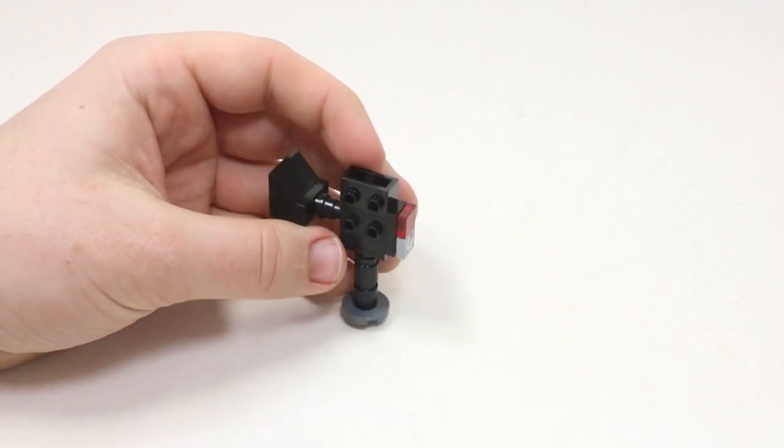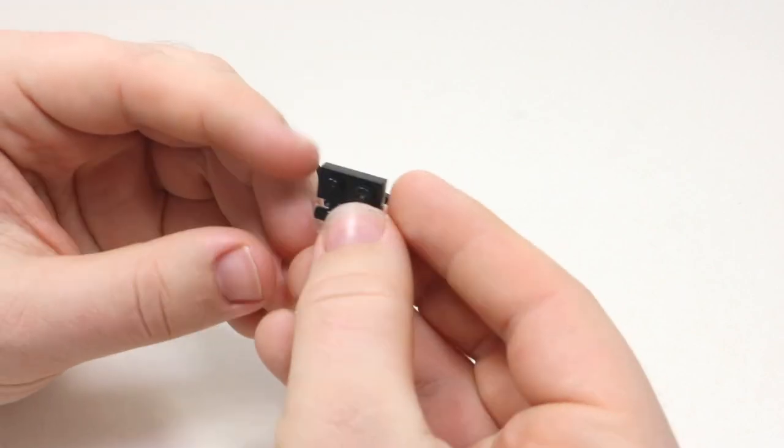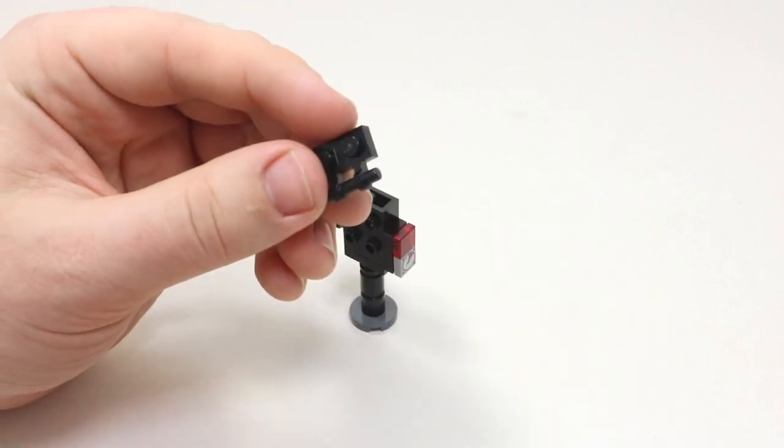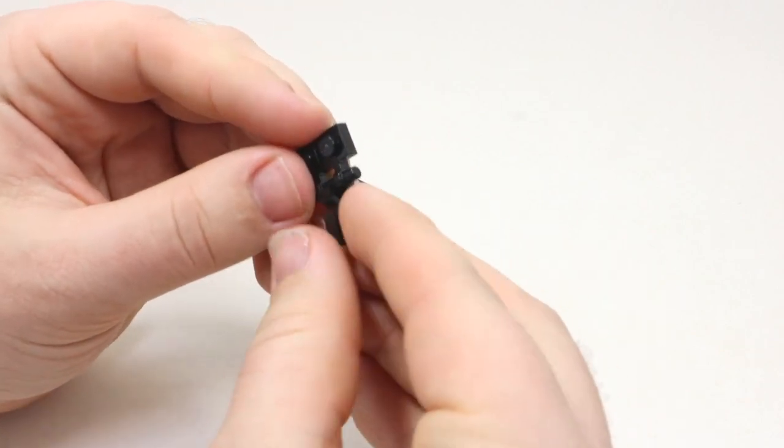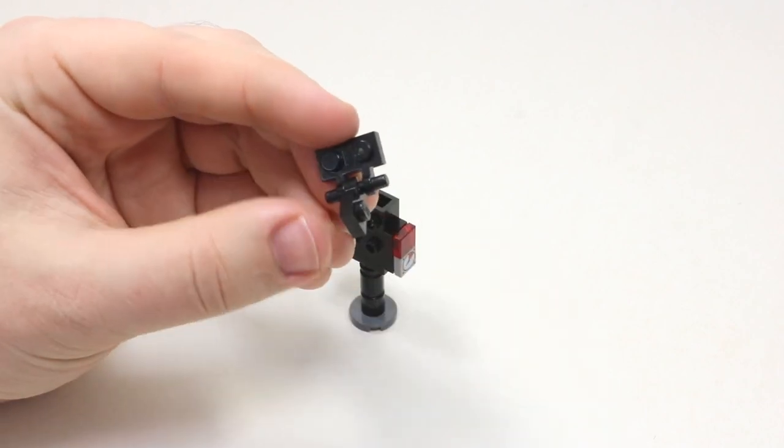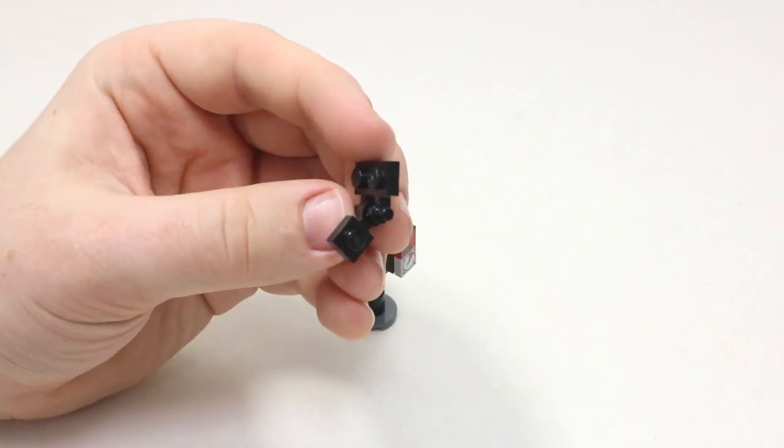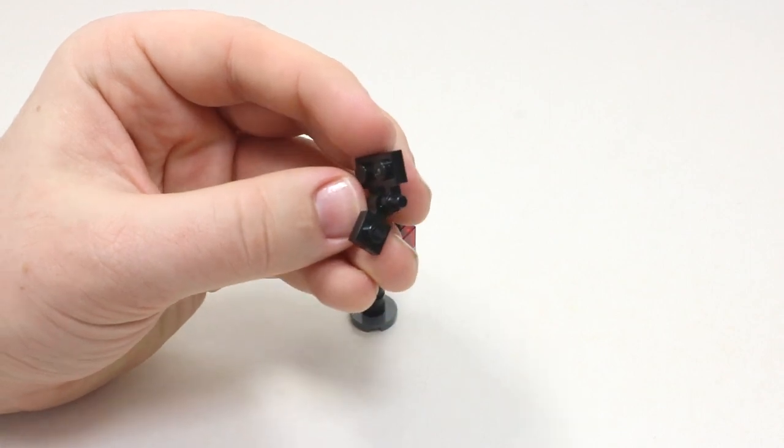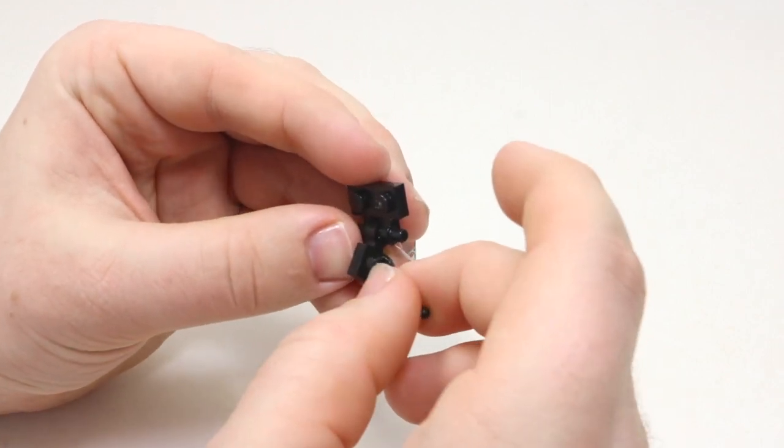Next to get started, what you can do is take the 1x1 clip bricks here and attach it with this other clip brick. I don't know the official names to either of these, but as you can see, this is what it does look like. This is what it's supposed to mimic. And then you'll take one of the levers here,